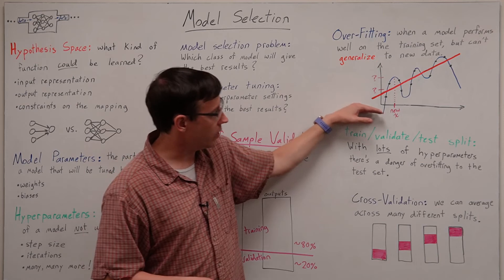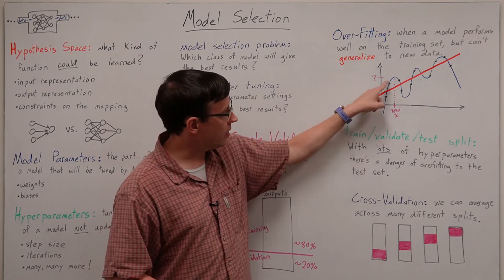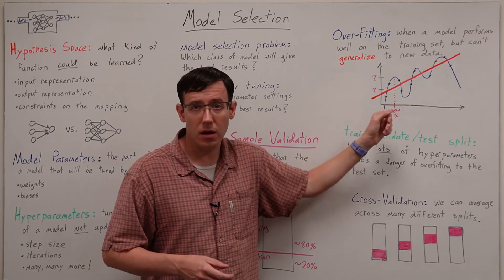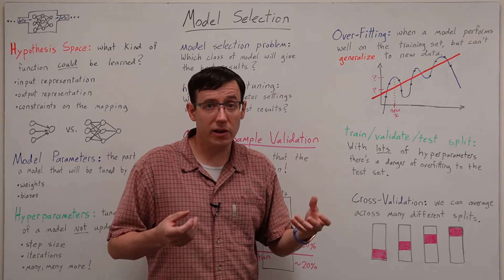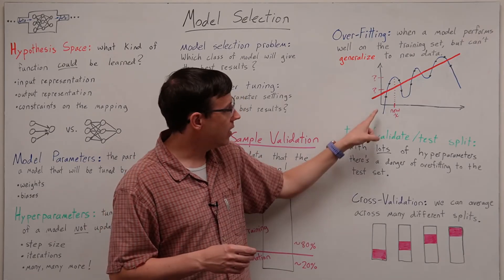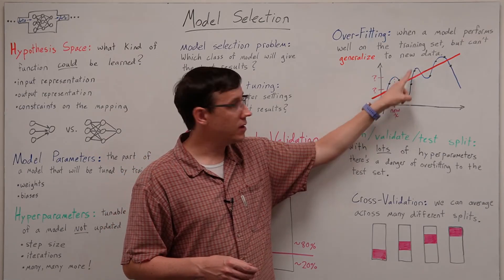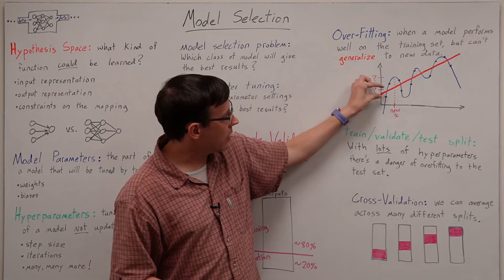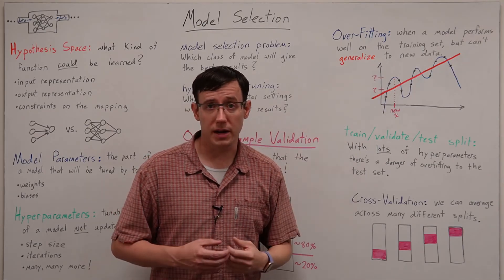Here we have a data set with one dimensional inputs and one dimensional outputs represented by the black points and we have two different candidate models trained on the data set. If our only goal were to accurately represent the training set the blue model would be perfect because it hits every single one of our data points while the red model has a fair bit of error on almost all of the data.